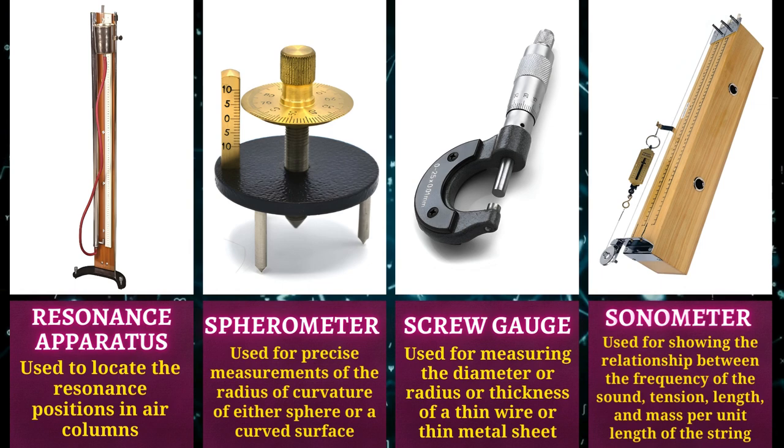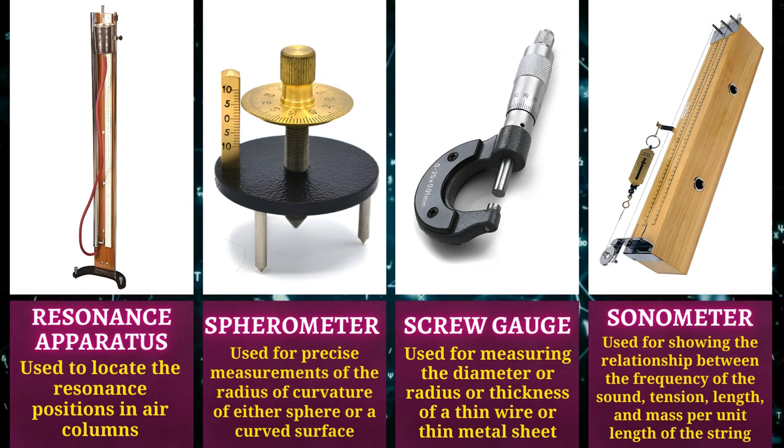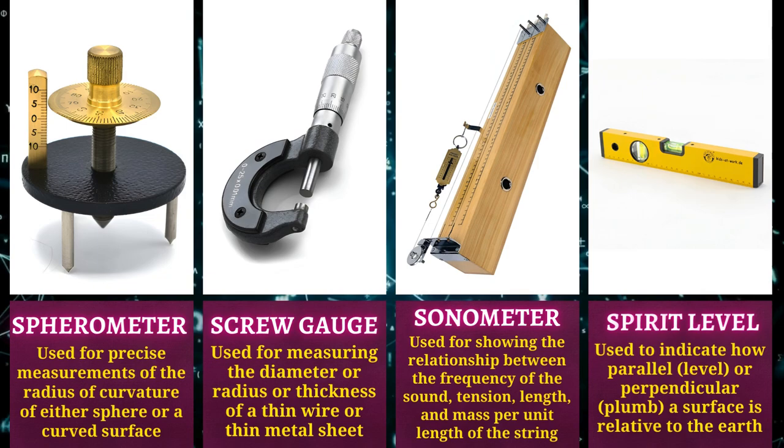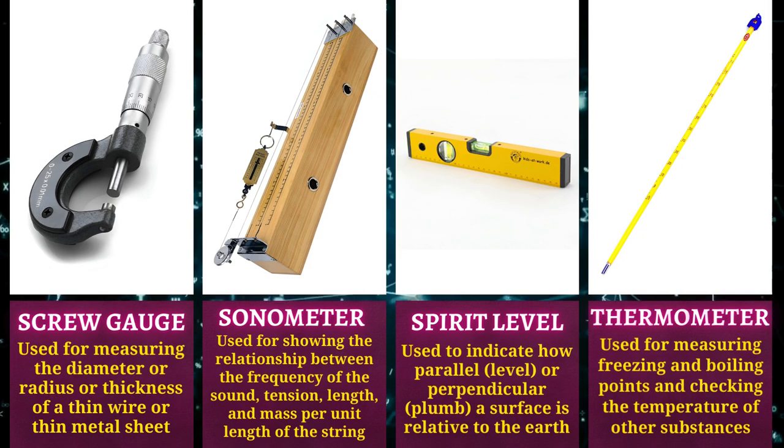Sonometer is used for showing the relationship between the frequency of the sound, tension, length, and mass per unit length of the string. Spirit level is used to indicate how parallel, level, or perpendicular a surface is relative to the earth.